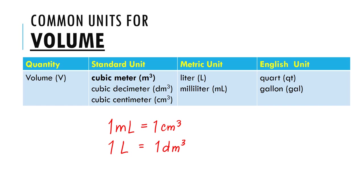From time to time, you can use these different equivalences to convert one unit to another. One more thing: 1 cubic meter is equivalent to 1,000 liters.